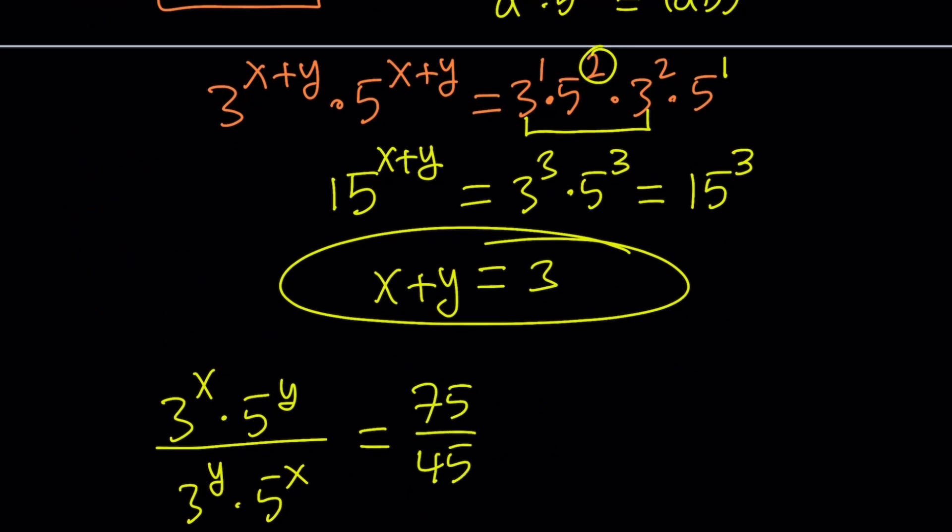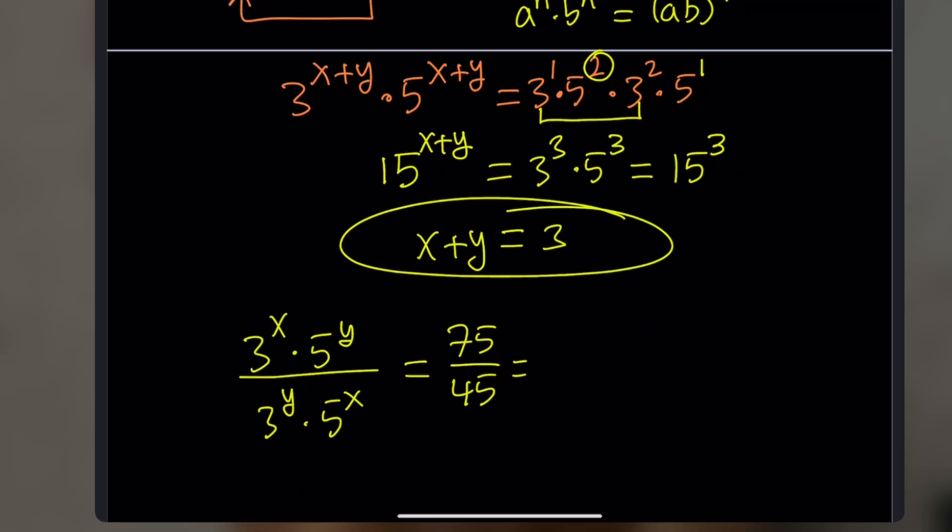That can definitely be simplified. Think of a common factor. I can think of 5. So we can write this as 5 times 15 and 5 times 9. But then I noticed that 15 and 9 still have common factors, which is a 3. So both of these numbers are divisible by 15.